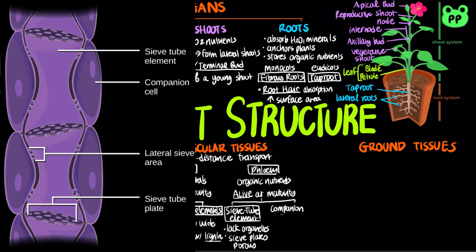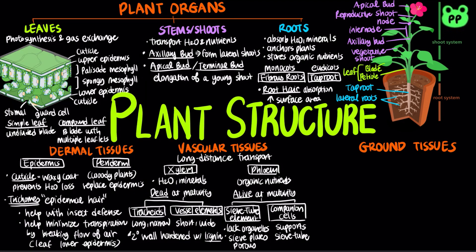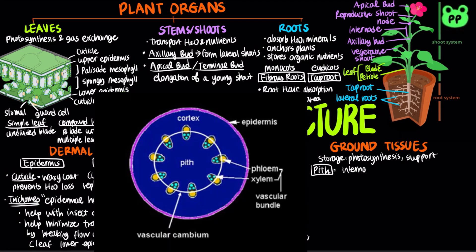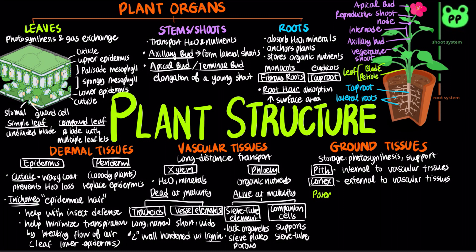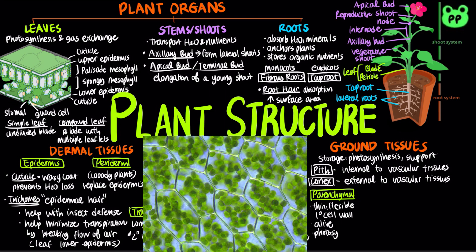Each sieve tube element is supported by a companion cell, whose nucleus and ribosomes serve both cells. Tissues that are neither dermal nor vascular make up the ground tissue system. They include cells specialized for storage, photosynthesis, and support. The ground tissue internal to vascular tissue is called pith, whereas ground tissue external to vascular tissue is called cortex. Parenchyma cells have primary cell walls that are relatively thin and flexible. They are alive at maturity and perform most of the metabolic functions of the plant, including photosynthesis in the leaf and storage of starch in stems and roots.